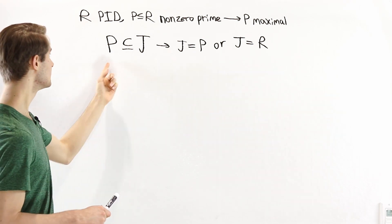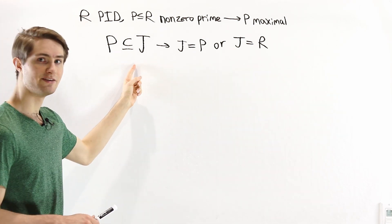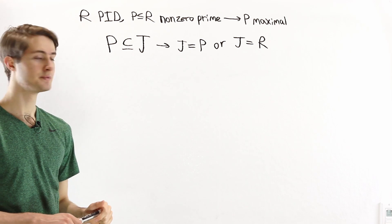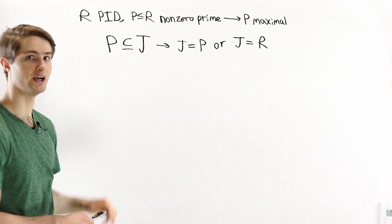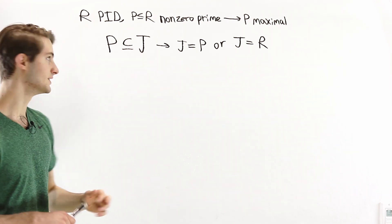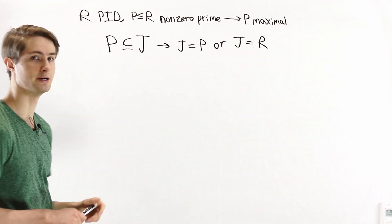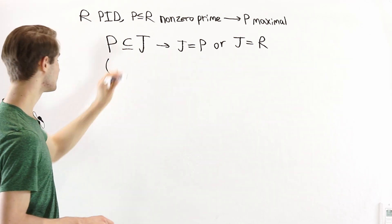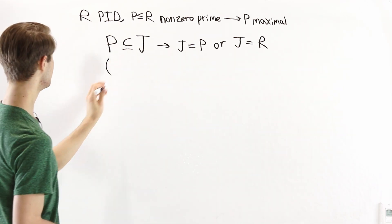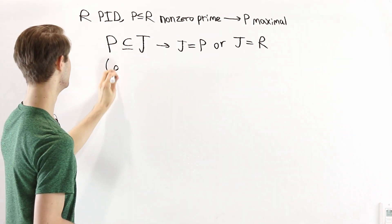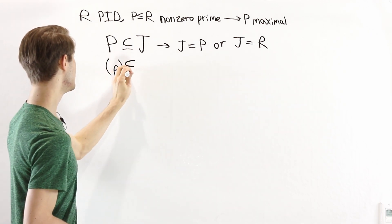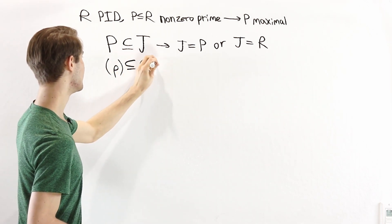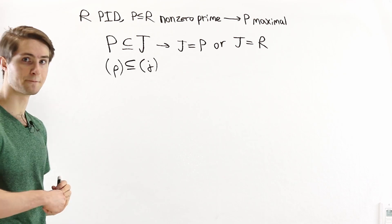Let's suppose we have this ideal J which contains P. We know that both P and J are principal ideals because we're in a PID. So P, this prime ideal, is going to be generated by some element of the ring, and J is also going to be generated by some element of the ring.